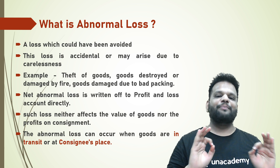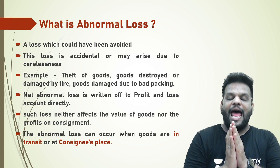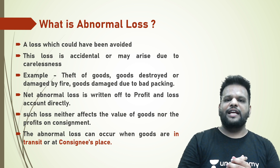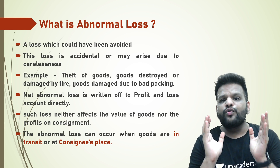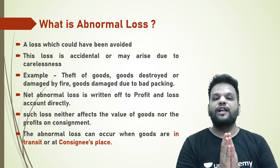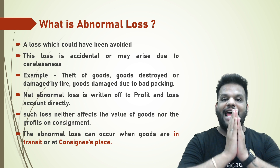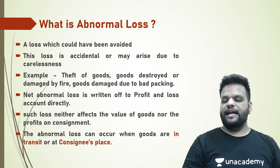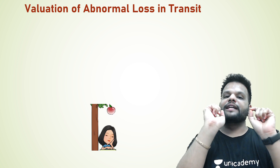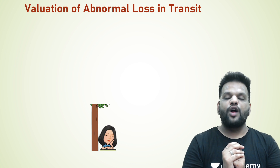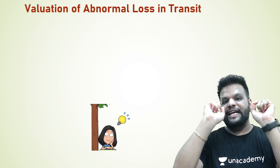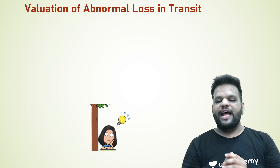Abnormal loss can happen in transit or at the consignee's place. How do we value it if the loss is in transit, and how do we value it if the loss is at the consignee's place? Let's see how the valuation of abnormal loss will be carried out if it happens in transit.